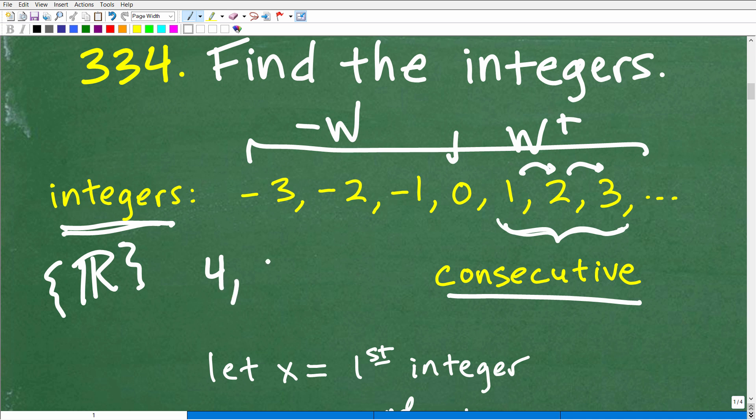So things like 4, 7, and 9, these are not consecutive. 4, 5, and 6, because they're one right after the other, these are consecutive. So these are consecutive numbers and specifically consecutive integers.